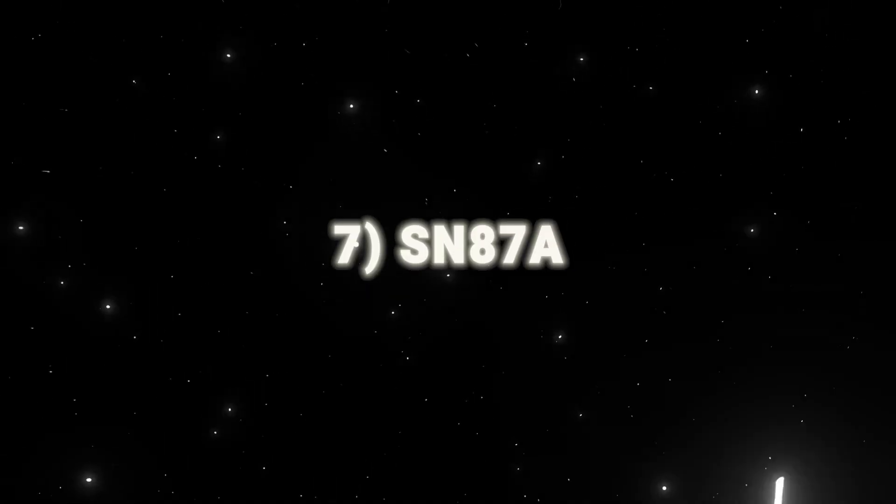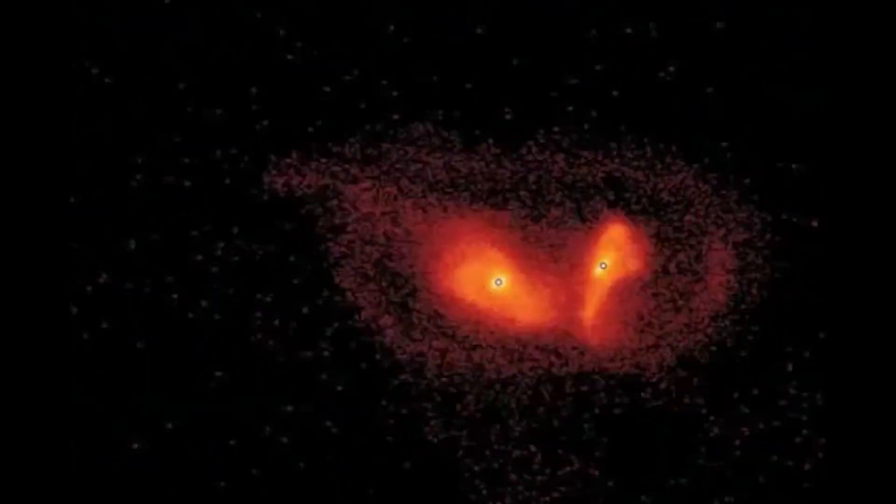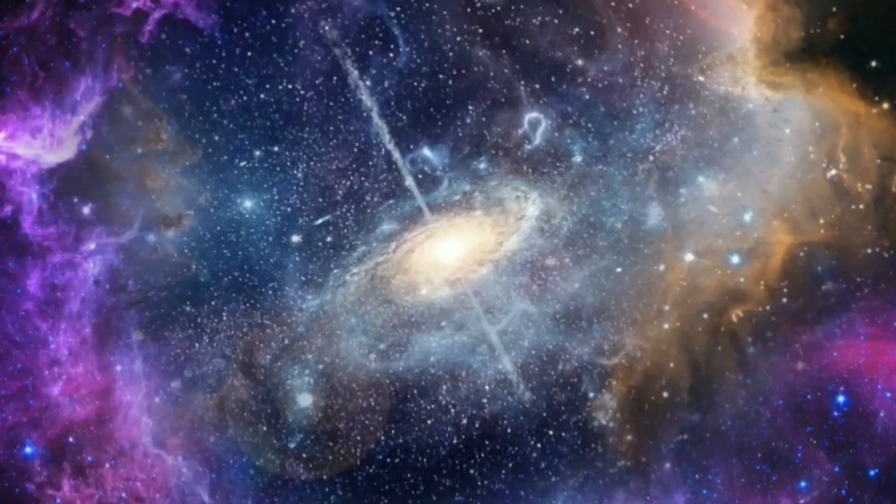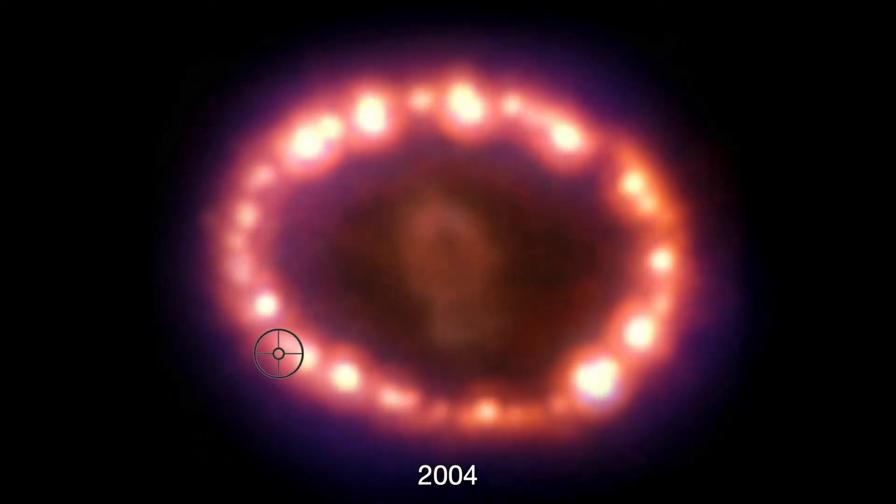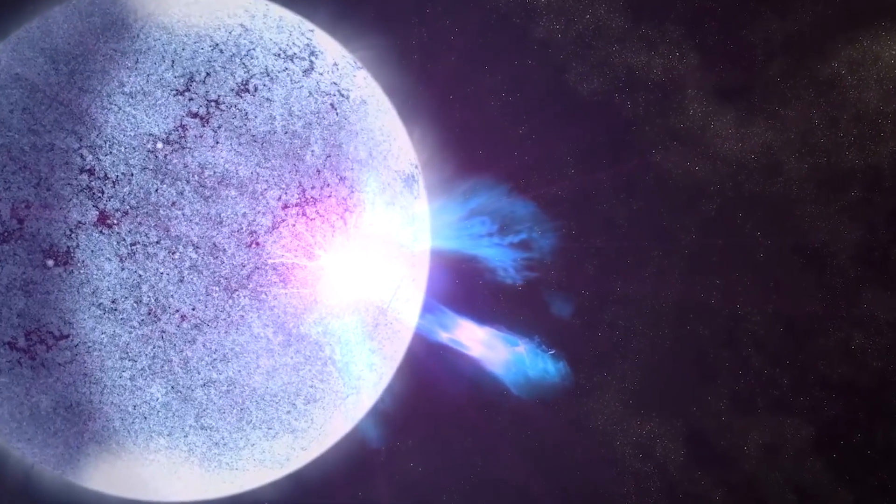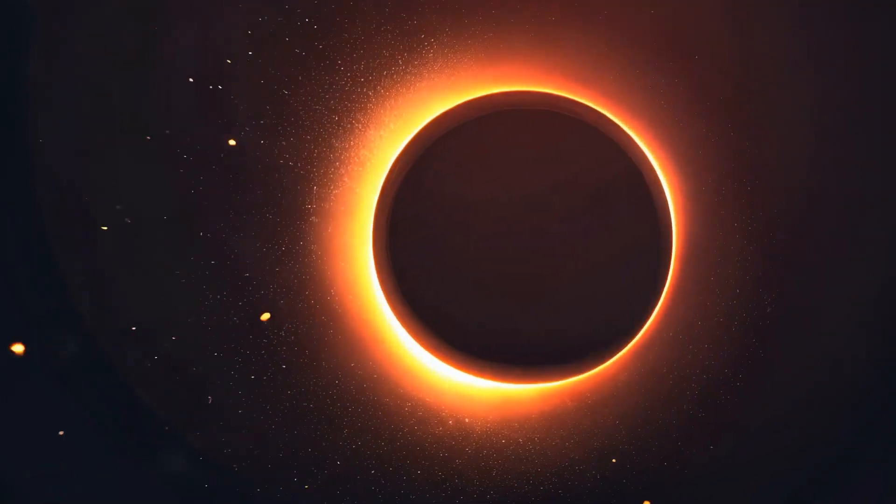7. SN-1987A. On February 24th, 1987, the southern sky revealed an extraordinary sight in the Large Magellanic Cloud, Supernova 1987A, one of the brightest stellar explosions in centuries. Observations from 1999 to 2013, captured by Chandra Blue and Hubble Orange and Red, show a dense gas ring glowing as the supernova's shockwave energizes it.